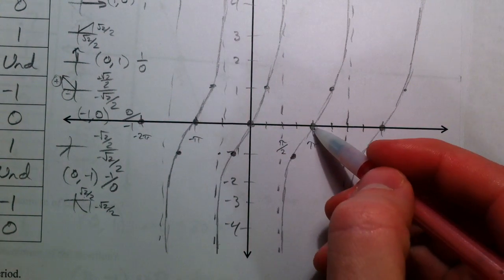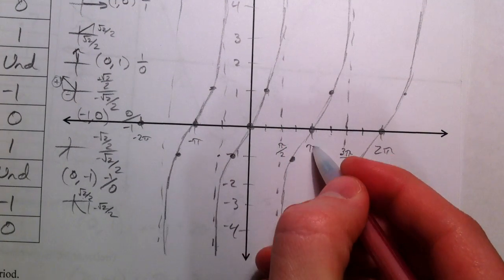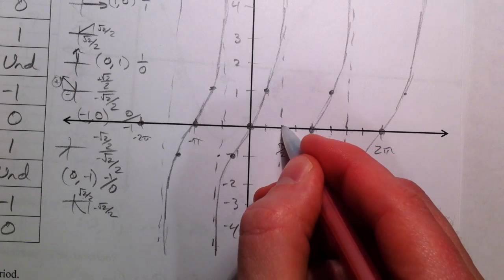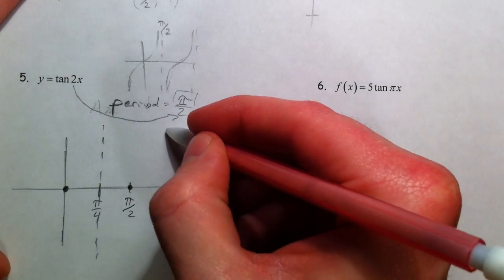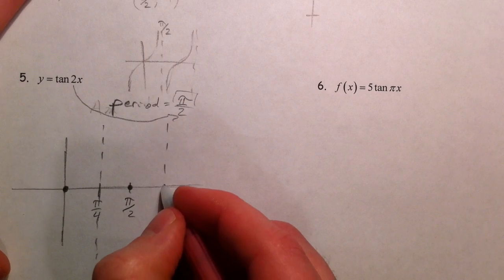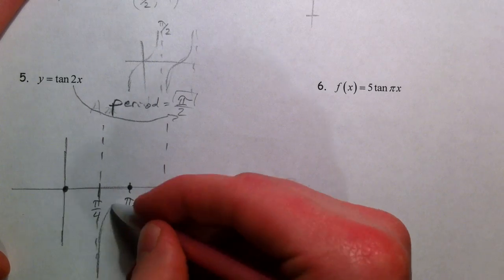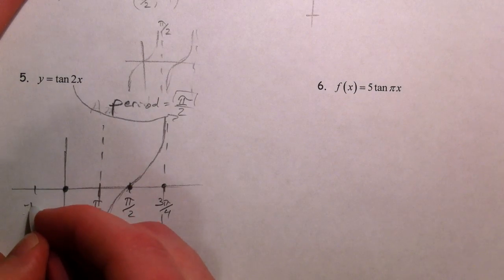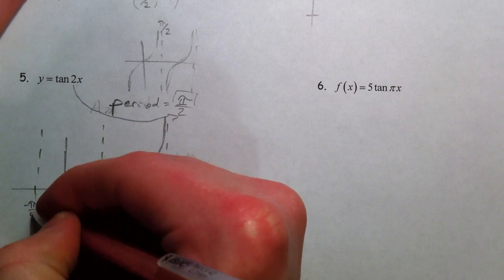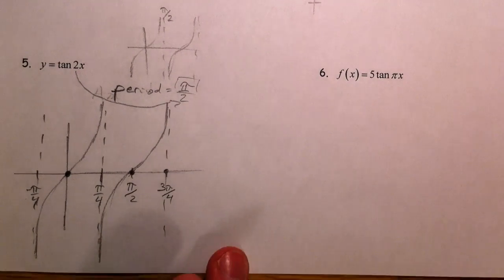Keep in mind what our original tangent graph look like. Asymptote at π over 2 so now our asymptote's half as close π over 4. Crossed at π so now it's crossing twice as close π over 2. And so you can put another asymptote at 3π over 4 if you want. And we're just going to get the general gist of the tangent curve like that. Negative π over 4. And there's your tangent curve.